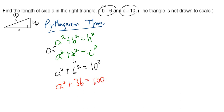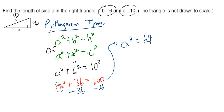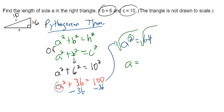Now we want to solve for A. Technically this is quadratic, but since A squared is the only term with A in this problem, we can solve for A by subtracting 36 from both sides, getting A squared equals 64. To get A by itself, we cancel out the power of 2 by applying a square root to both sides. Square roots cancel out powers of 2, just as powers of 2 cancel out square roots. So we get A equals the square root of 64, which is 8.